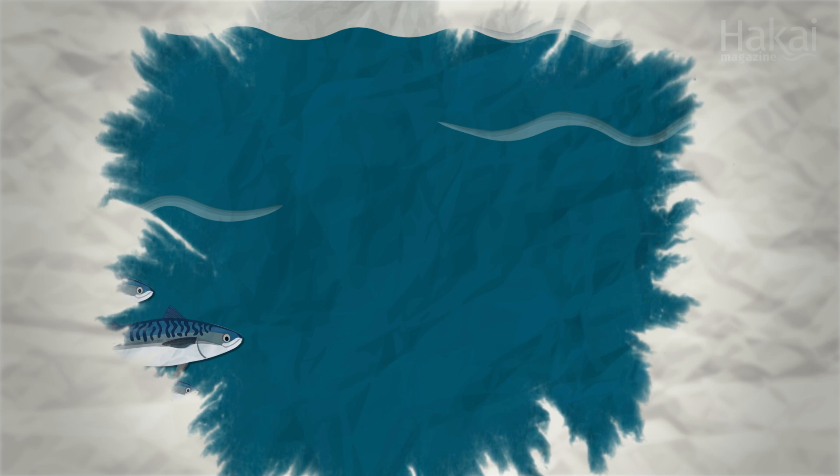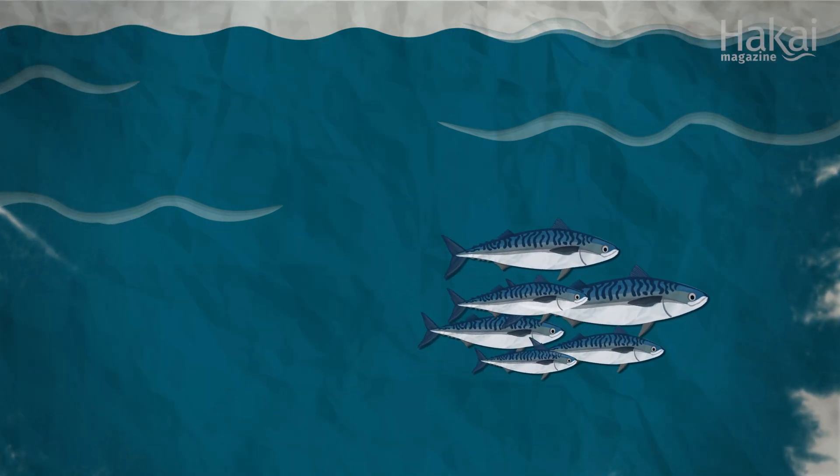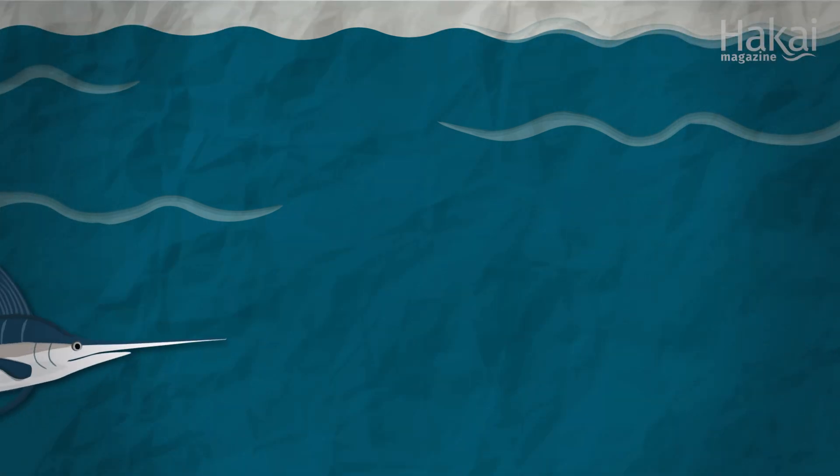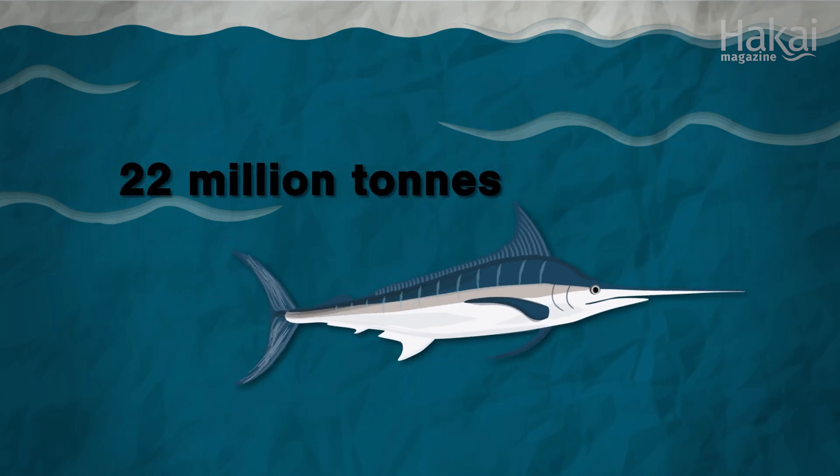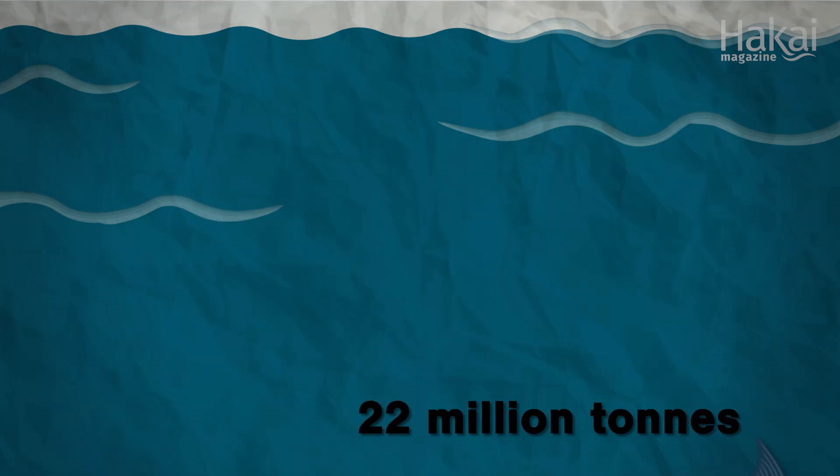Some of these fish would have been eaten in the upper reaches of the ocean, but more than half of the carbon, nearly 22 million metric tons, would have sunk to the sea floor in the fish's bodies.